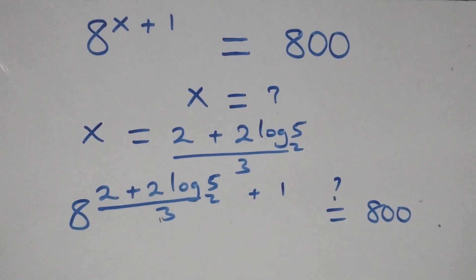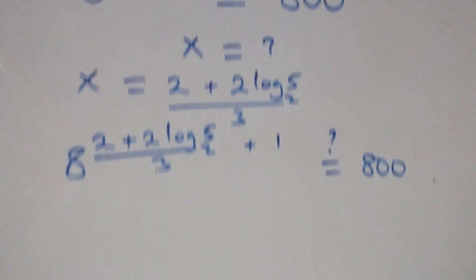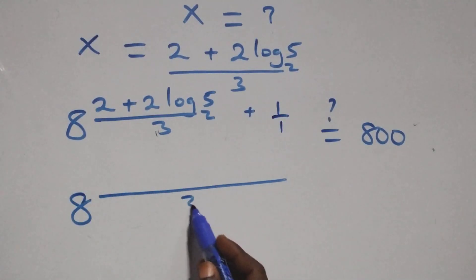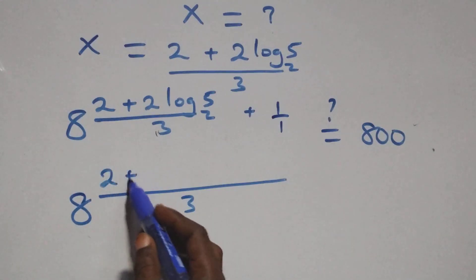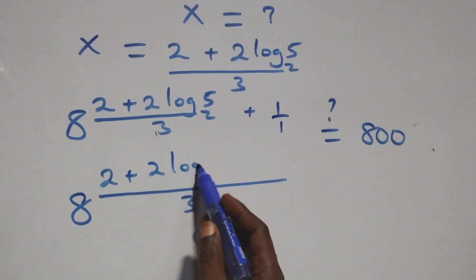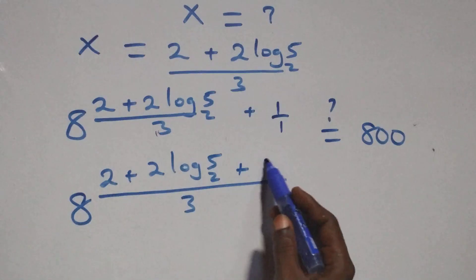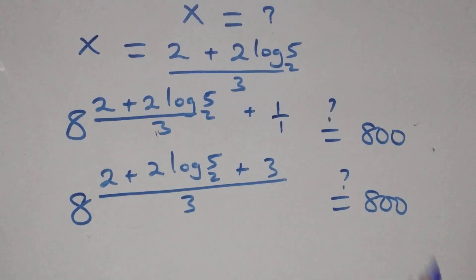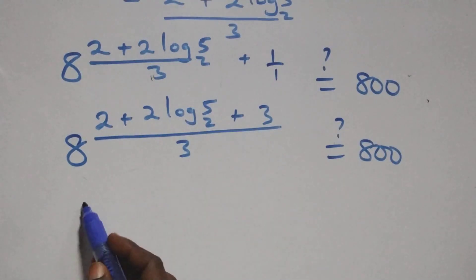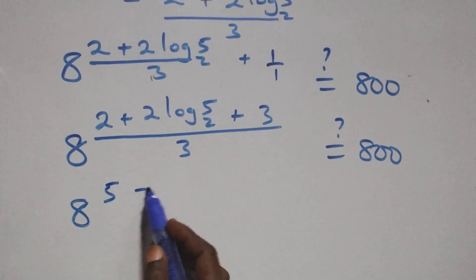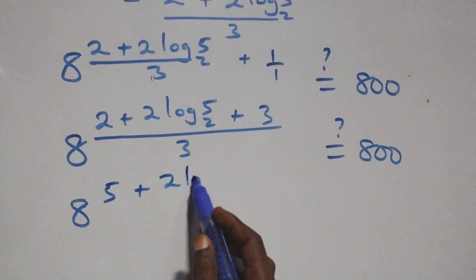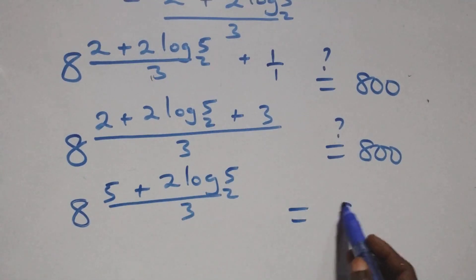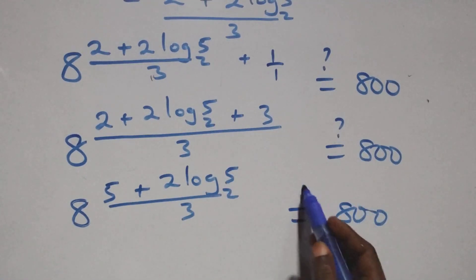We bring the exponent parts together as one. This is the same as 8 raised to power (2 plus 2 log 5 base 2 all over 3) plus 1, which gives us (2 plus 2 log 5 base 2 plus 3) all over 3 — is it equal to 800?